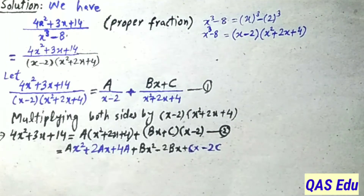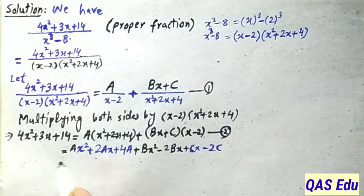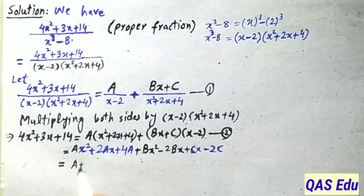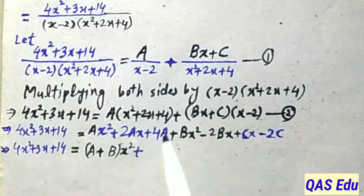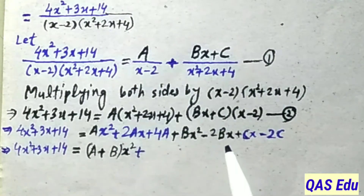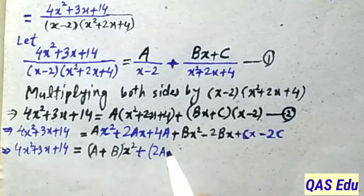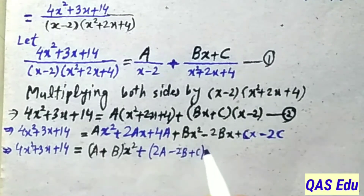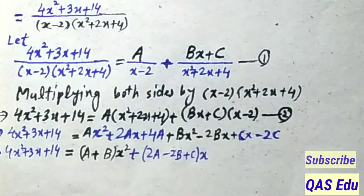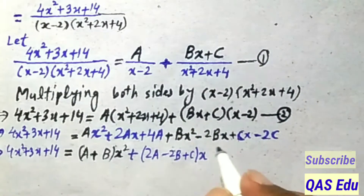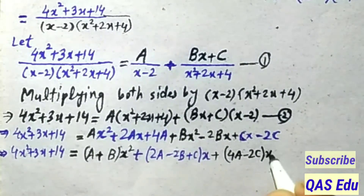Collecting like powers of x: the x² terms give (A + B)x². The x terms give (2A - 2B + C)x. The constant terms give (4A - 2C). This gives us equation number 3 by comparing coefficients.